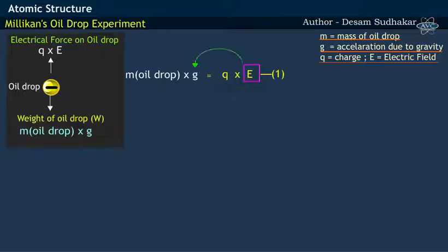By moving E-term to the other side of the equation, we get charge on oil droplet Q equivalent to Mg divided by E.